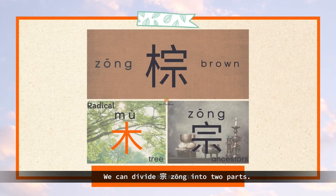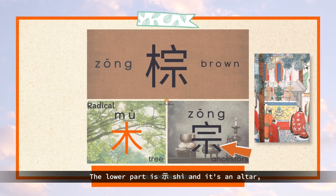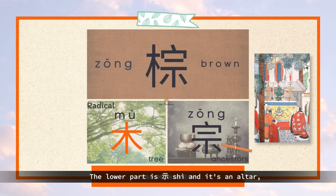We can divide 宗 into two parts. The upper part is 宀 and it means building. The lower part is 示, an altar where ancestors are worshipped.